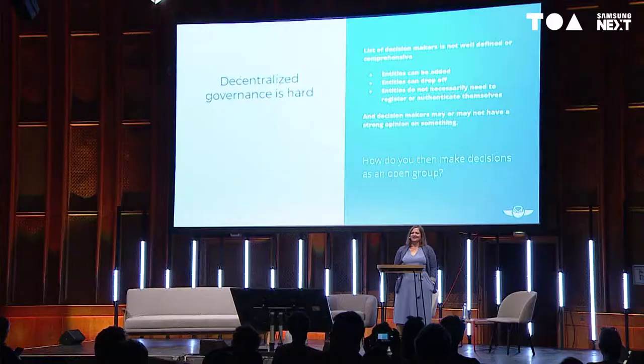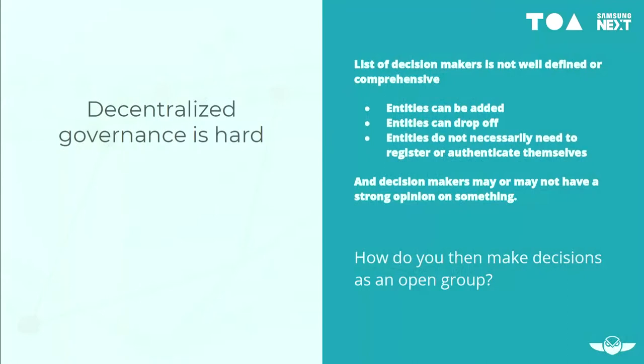I speak about Futaki and distributed open governance today. Let me start off by saying decentralized governance is hard. Non-decentralized governance often is difficult enough — finding consensus in a group where you know who is actually in the group is often difficult, and now imagine doing the same thing with a list of decision-makers that's not well-defined or comprehensive.